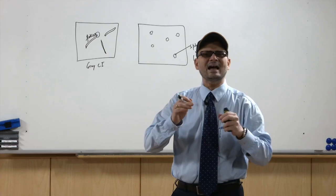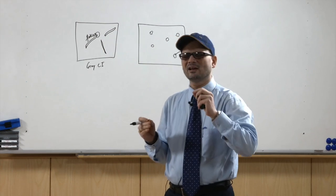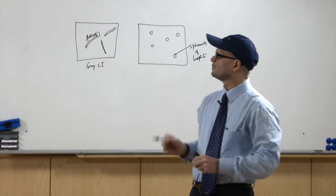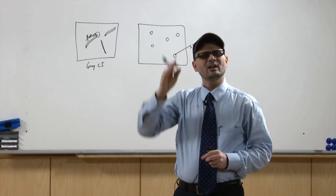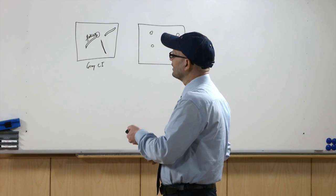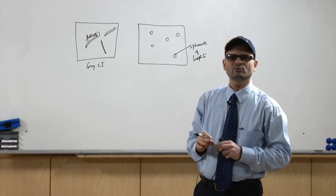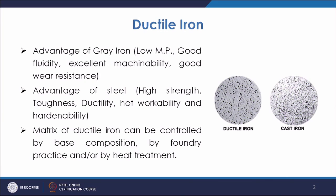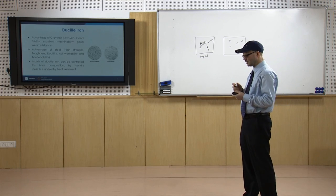Steel has a higher carbon percentage, so its melting temperature goes close to 1600°C, whereas ductile iron melts close to 1400–1450°C, improving castability. You thus get better properties of both grey iron and steel. The matrix of ductile iron can be controlled by base composition, by foundry practice, or by heat treatment.